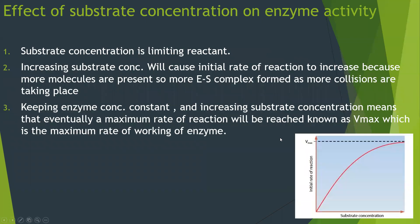Regarding substrate concentration: increasing it causes an increase in the initial rate of reaction because more molecules are present, so more collisions occur and more enzyme-substrate complexes form. If enzyme concentration is kept constant and substrate concentration is increased, the rate eventually reaches a maximum — Vmax — after which the graph levels off. At this point, enzyme concentration becomes the limiting reactant.